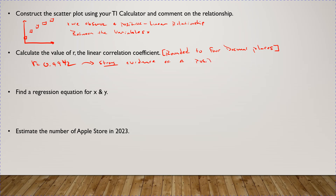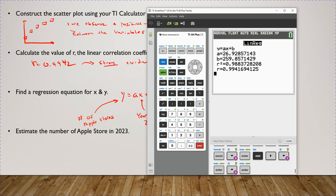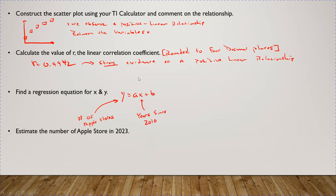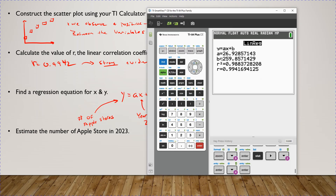Next, find the regression equation for X and Y. That is Y equals ax plus b. Y is the number of Apple stores worldwide, and X is years since 2010. You can see in your calculator — rounding to two decimal places — the slope a is 26.93, giving the equation Y equals 26.93 times X plus 259.86.